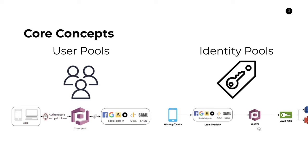Let's dig into each concept a little more, starting with user pools and what the creation experience looks like. In the AWS console, when creating a user pool you have options for pool name, required attributes, email aliases, case sensitivity, password length, and password policies. You can control special character requirements and whether users can sign themselves up or if someone has to manually create the user. There's a plethora of different options you can play around with and change at any time.